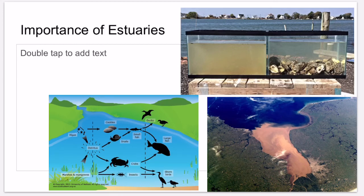Lastly, estuaries are important to our economy. Three quarters of the fish caught commercially in the United States live in estuaries. On average, estuaries produce more food per acre than even the most productive farmland. About 30 commercial fishing species live in North Carolina's estuaries, and estuaries are also major sites for tourism and recreation.